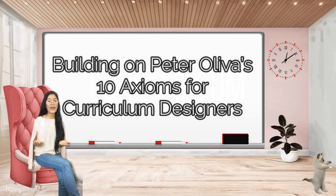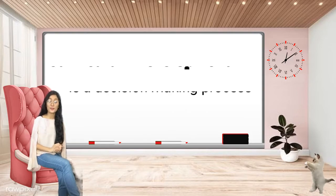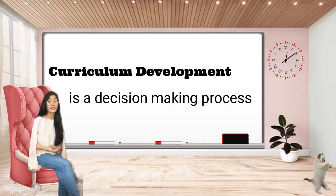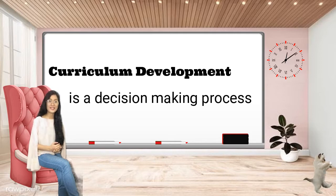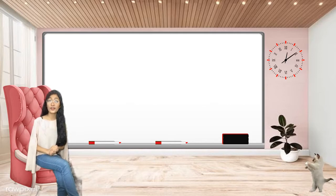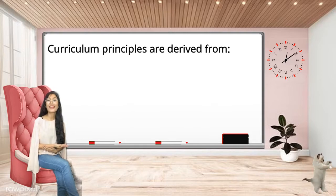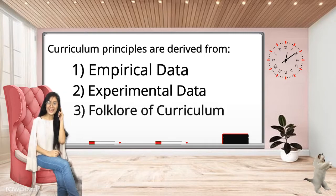We already have background knowledge about what curriculum development is. Curriculum development is a decision-making process. When dealing with curriculum development or even problems with the curriculum, it is useful to have a set of principles that can serve as guidelines for deciding what is good, right, and reasonable. According to Oliva, curriculum principles are derived from empirical data, experimental data, the folklore of curriculum, and common sense.